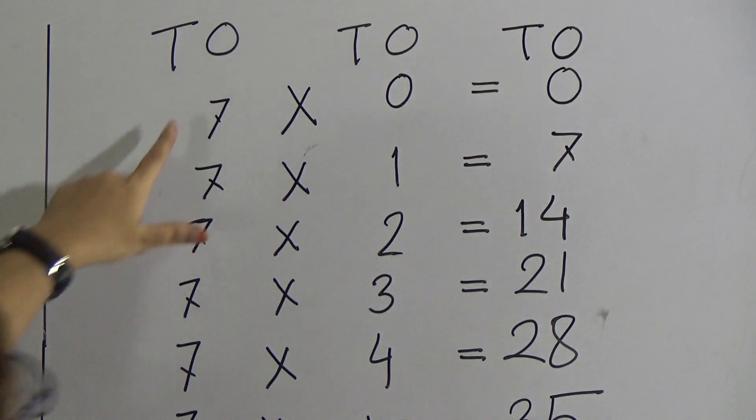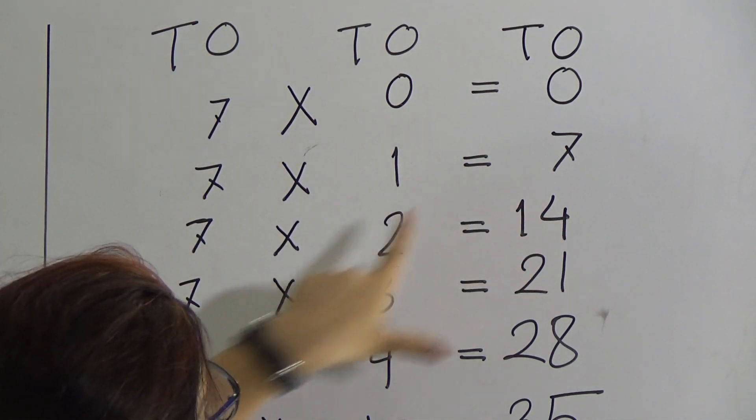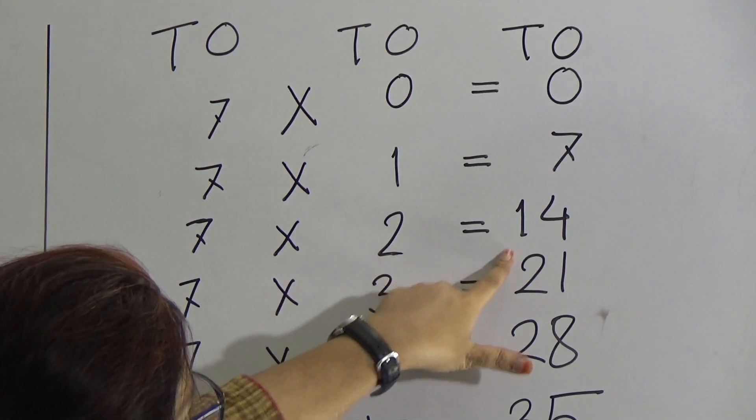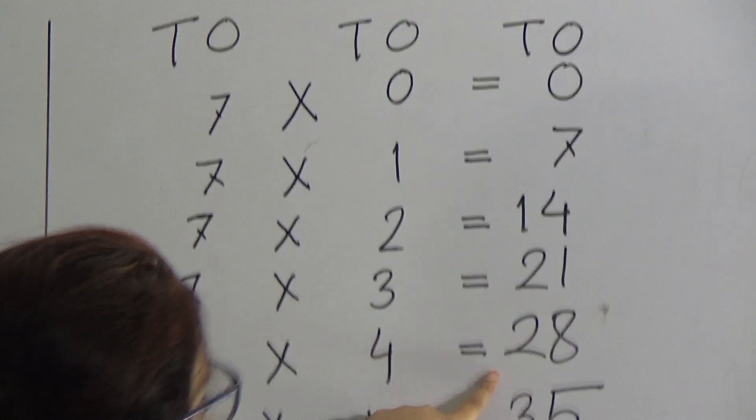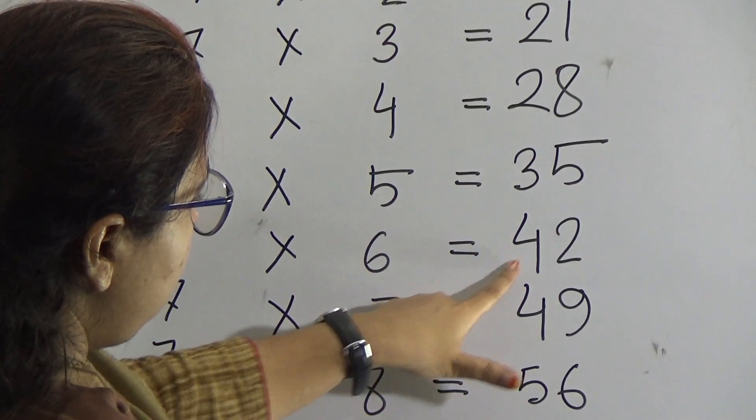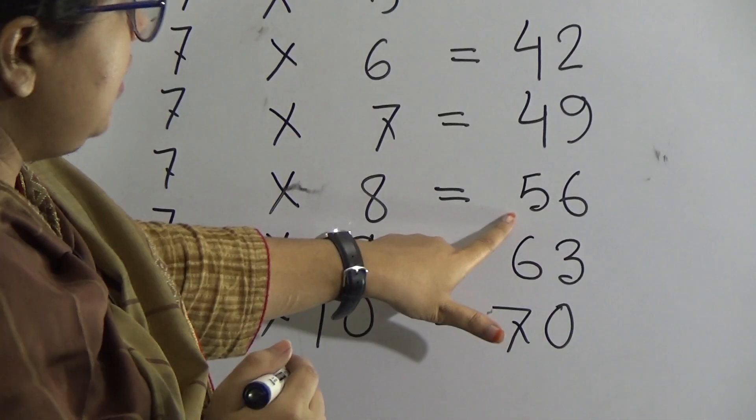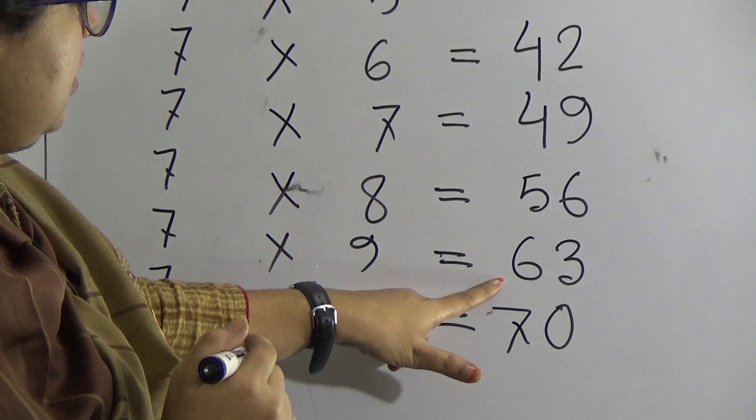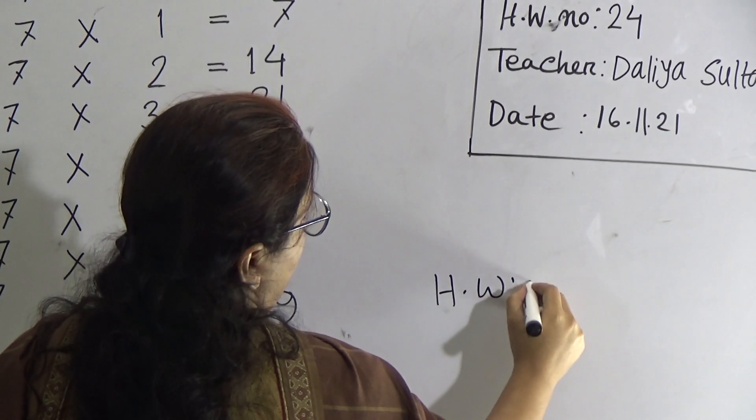Students I repeat. 7 times 0 is 0, 7 times 1 is 7, 7 times 2 is 14, 7 times 3 is 21, 7 times 4 is 28, 7 times 5 is 35, 7 times 6 is 42, 7 times 7 is 49, 7 times 8 is 56, 7 times 9 is 63, 7 times 10 is 70.